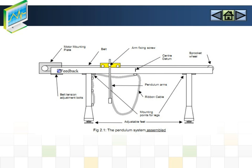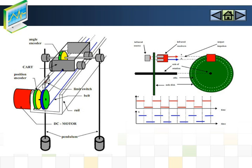The first is the pendulum itself, which is mounted on a cart. The pendulum can swing freely in the vertical plane. The cart is driven by a DC motor connected by a belt. The cart can move left and right on a limited rail length to swing the pendulum. The cart position and the pendulum angular position can be monitored using a position encoder and angle encoder.